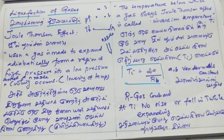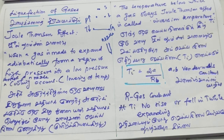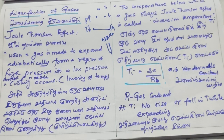If you consider pressure-volume work: when volume increases under constant temperature, the temperature before the process and after the process will be the same. If the temperature has been increased, the excess heat energy will be given to the surroundings. If the temperature is decreased, heat energy will come from the surroundings so the temperature will be sustained. This process is an isothermal change.